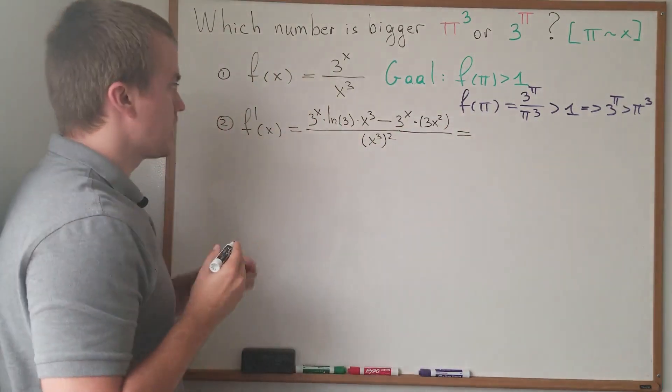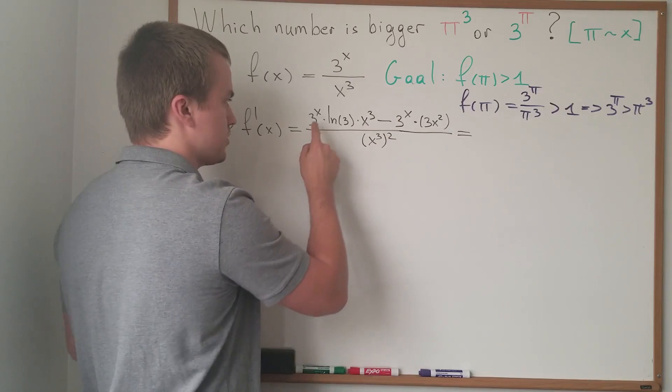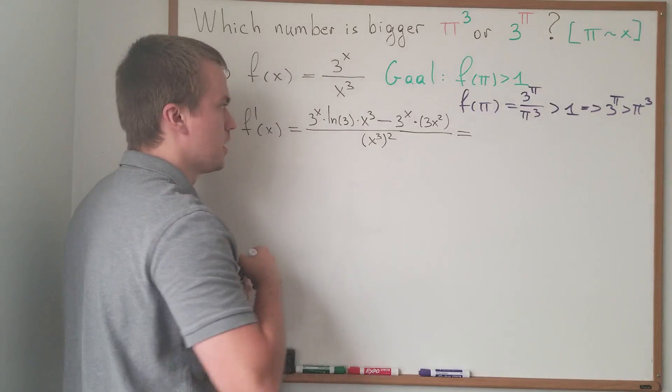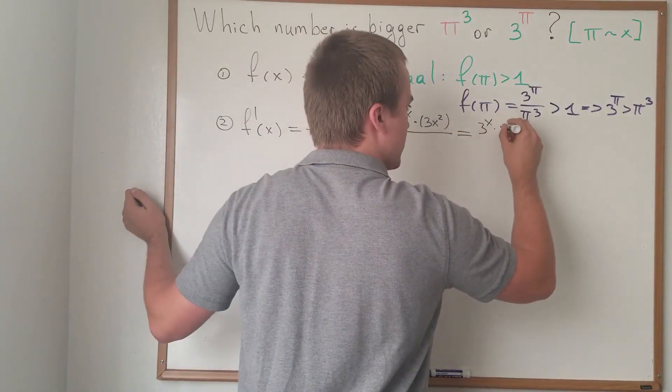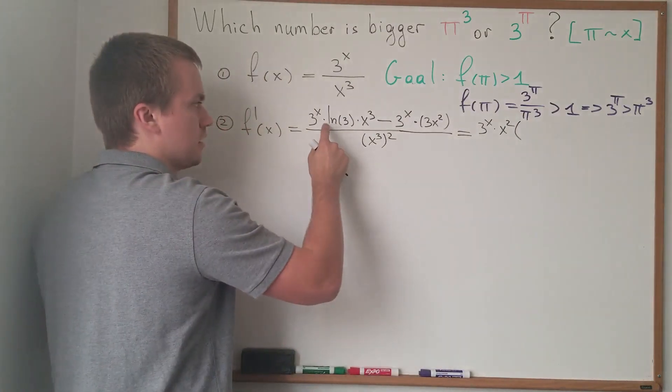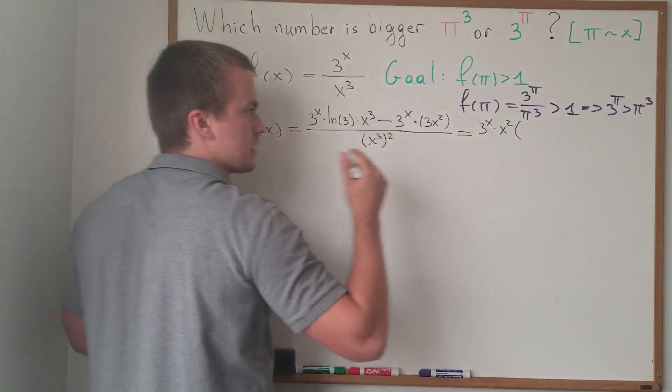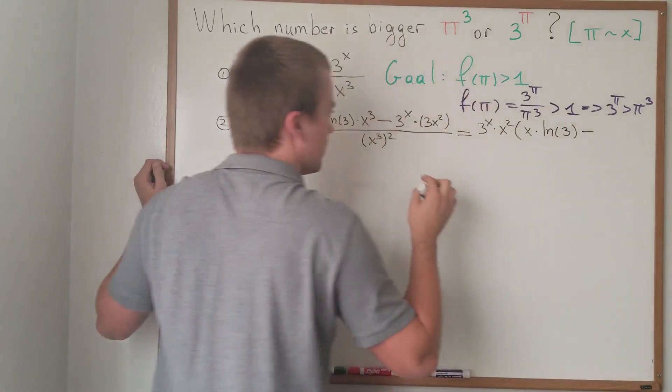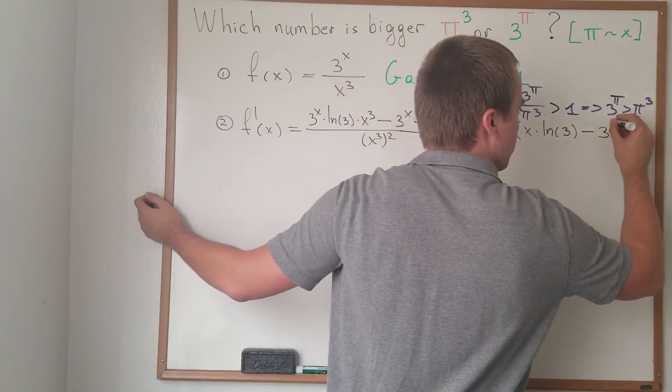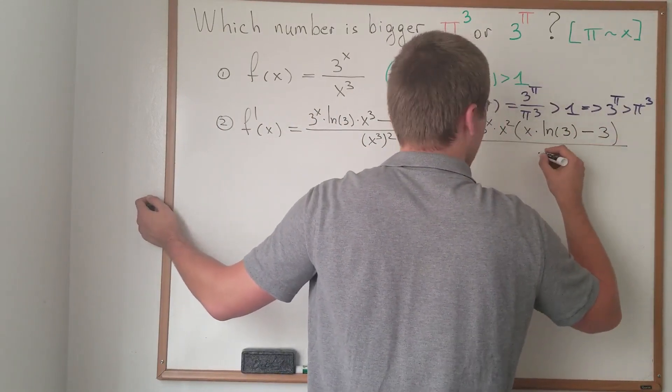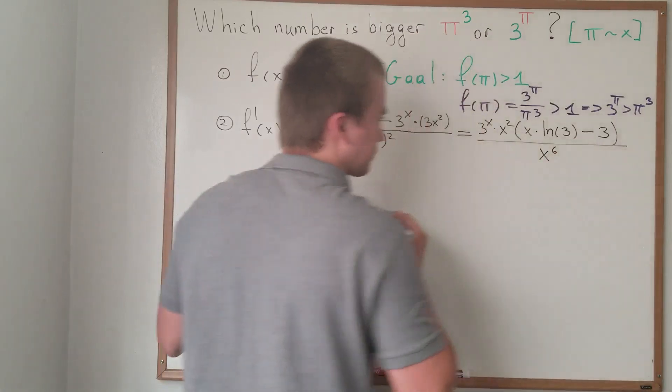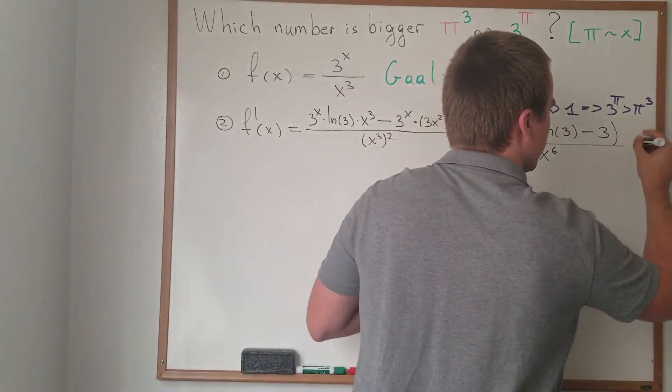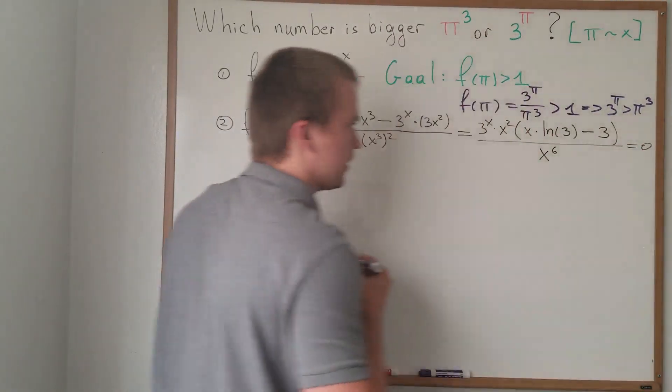Let's simplify this. We can see we have two terms. And for these terms, 3 to the power of x is common. And x squared is also a common factor. So, we can factor 3 to the x times x squared. And what are we going to left inside? ln(3) times x or x times ln(3) minus 3. And this one is x to the 6th. So we got a really nice expression. And we want to set this expression equal to 0 in order to find our critical points.